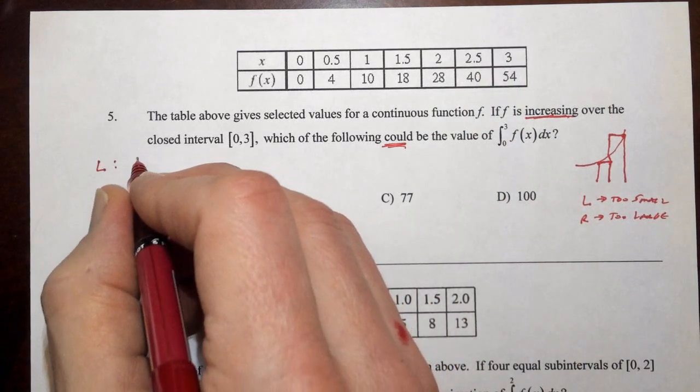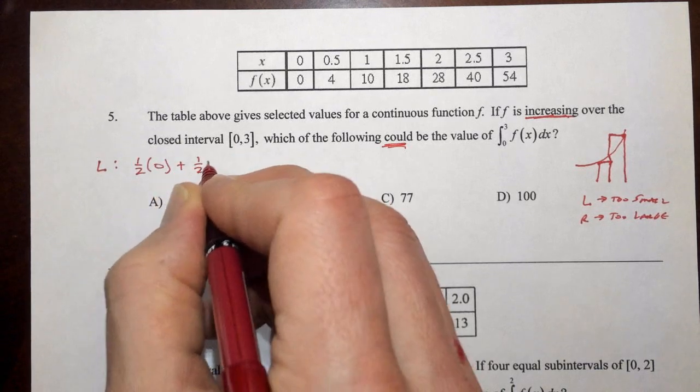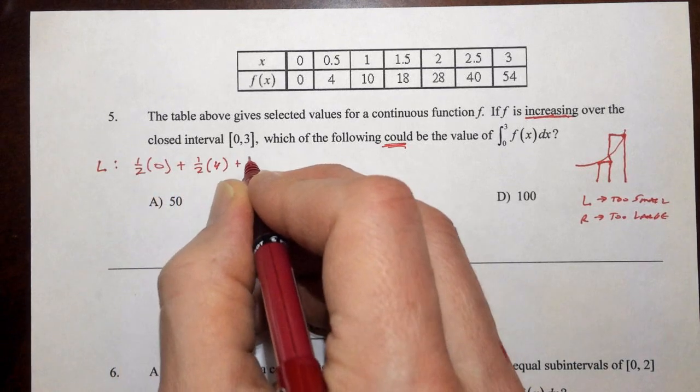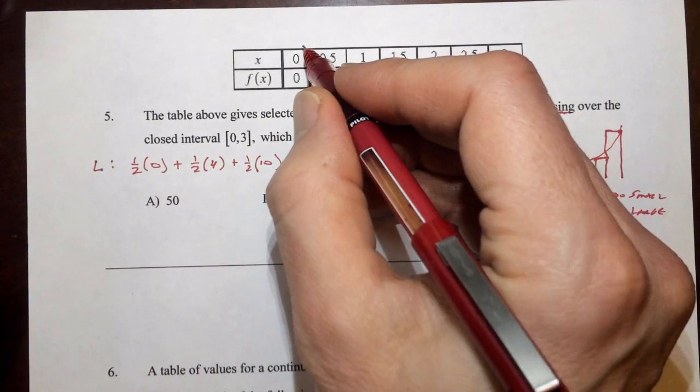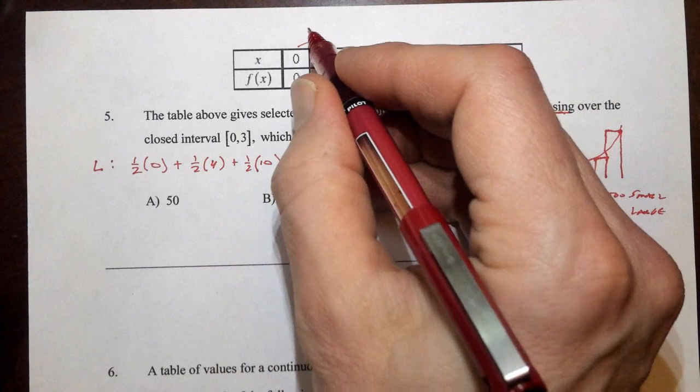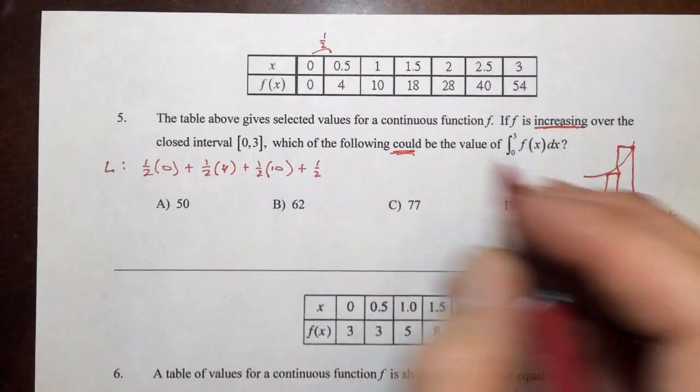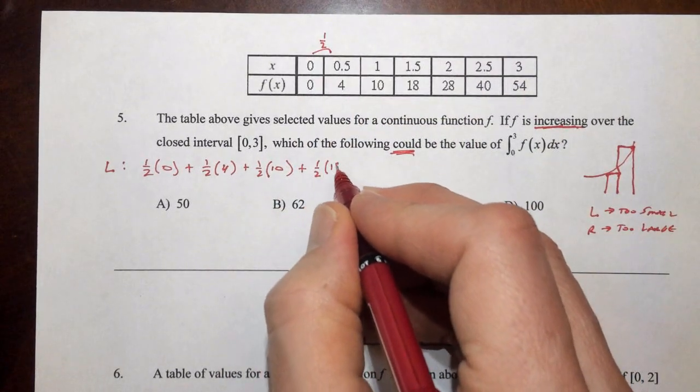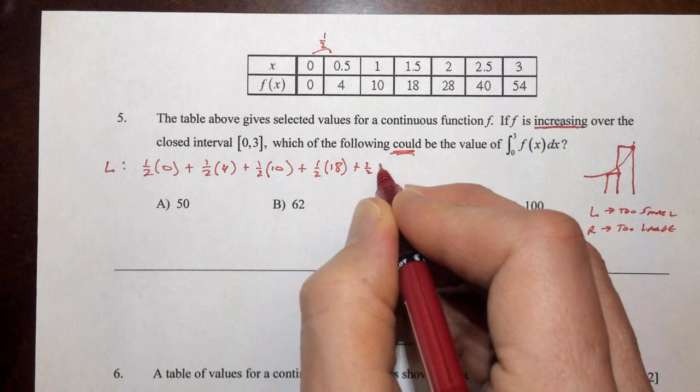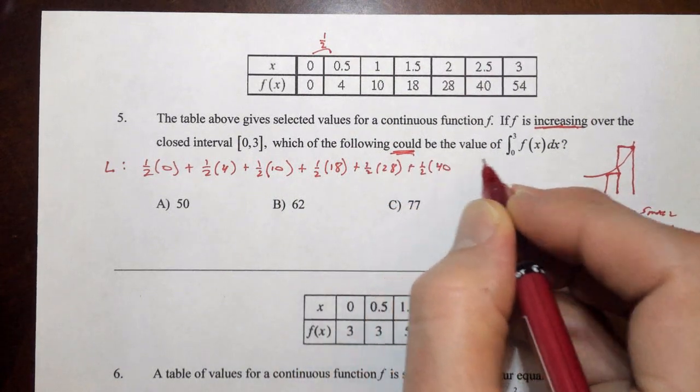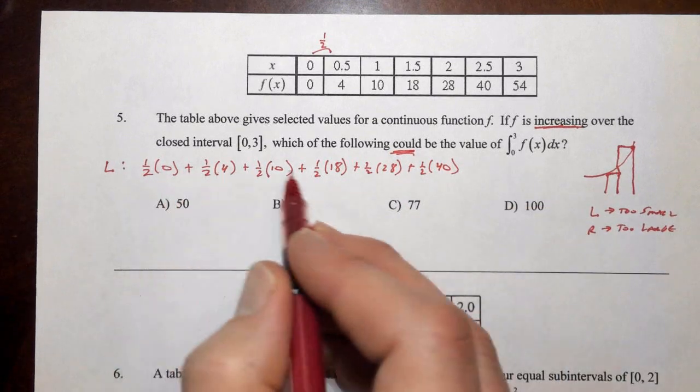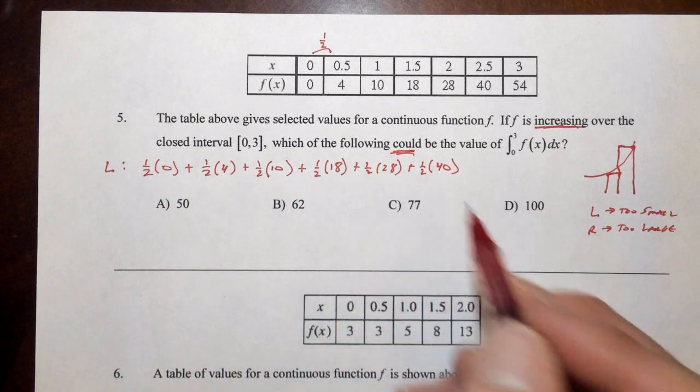That would be a half times zero plus a half times four plus a half times ten plus a half. I'm saying a half because each one of these is one half of a unit. Plus a half times eighteen plus a half times twenty-eight plus a half times forty. Those would be the one, two, three, four, five, six intervals.